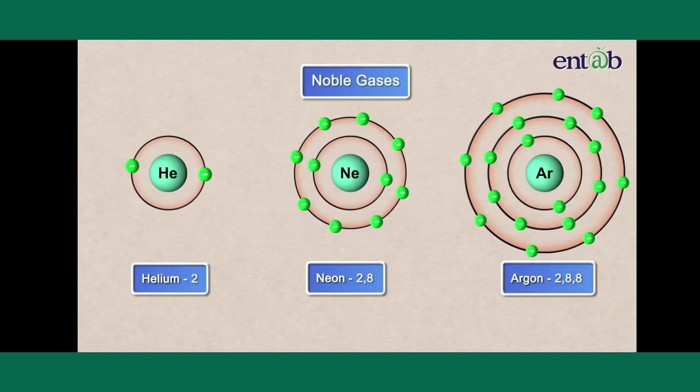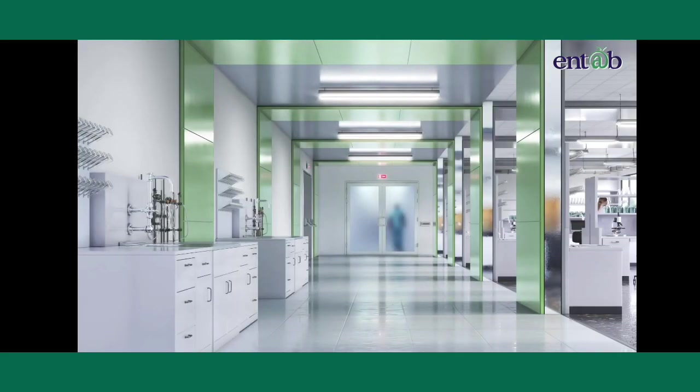All noble gases except helium have eight electrons in the valence shell. Let me tell you a short story to help you understand this a little better.